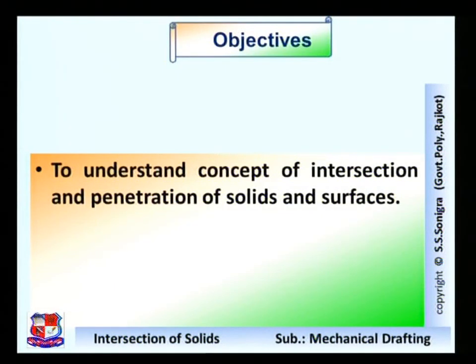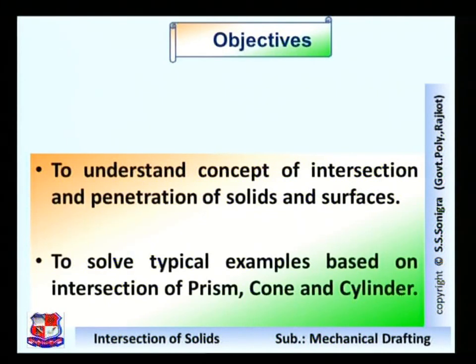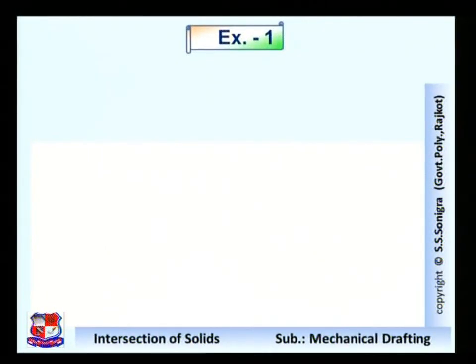Hello, myself Sunil Sonigra, and today in the subject of mechanical drafting we will consider a chapter titled intersection and penetration of solids and surfaces. In this chapter we will cover solutions of examples based on intersection of prism, cylinder, and cone. The objectives cover understanding the concept of intersection and penetration of solids and surfaces, and solving typical examples based on intersection of prism, cone, and cylinder.